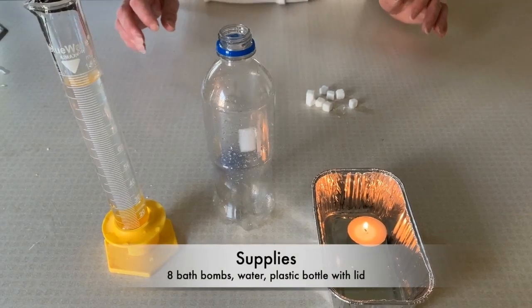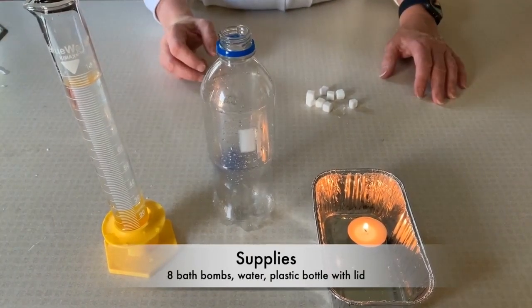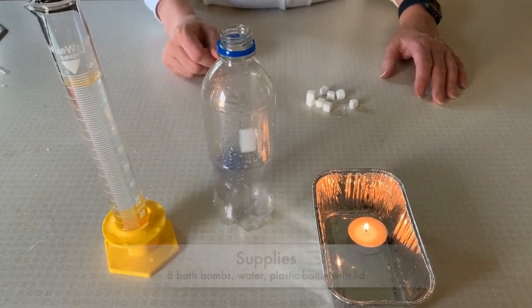Supplies for the experiment sent on a table, including 8 small bath bombs, water in a graduated cylinder, a plastic bottle with a lid, and a metal tin with a lit candle in it. We're going to test the density of the gas that's produced from the bath bomb when added to water.